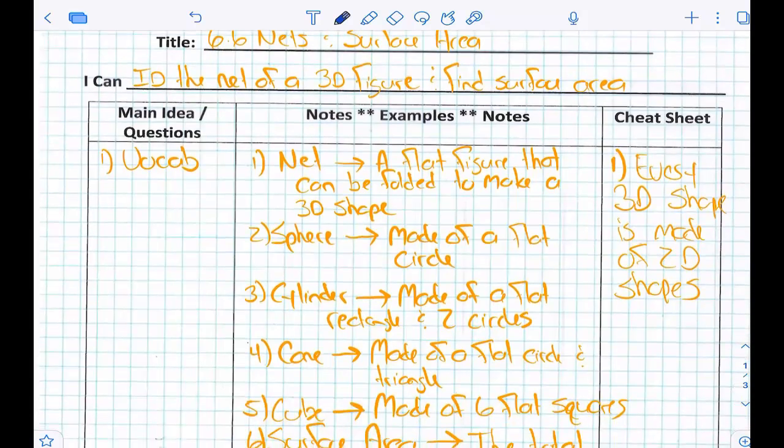Vocab: net. A net is a 3D shape that is smushed so that it is what? A 2D shape. A 2D shape or flat, right?